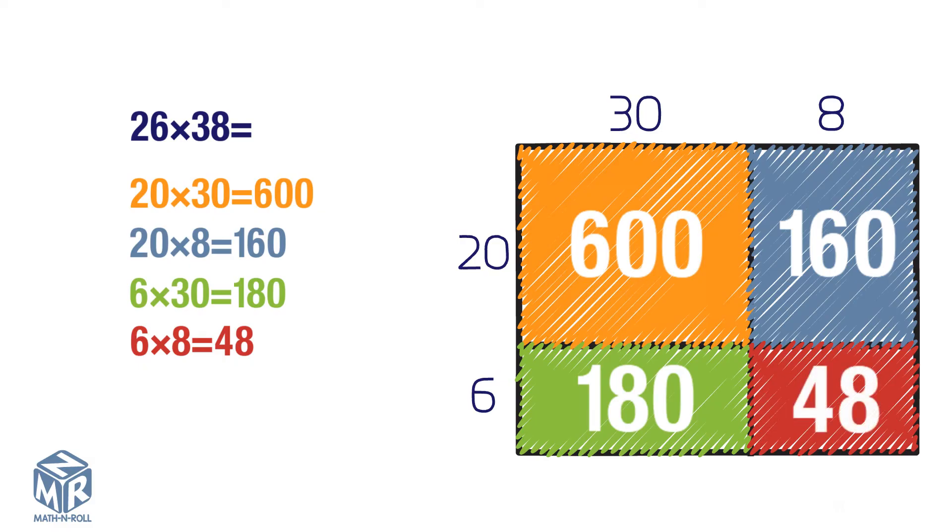Find the sum of the partial products. 600 plus 160 plus 180 plus 48 equals 988. So 26 times 38 equals 988.